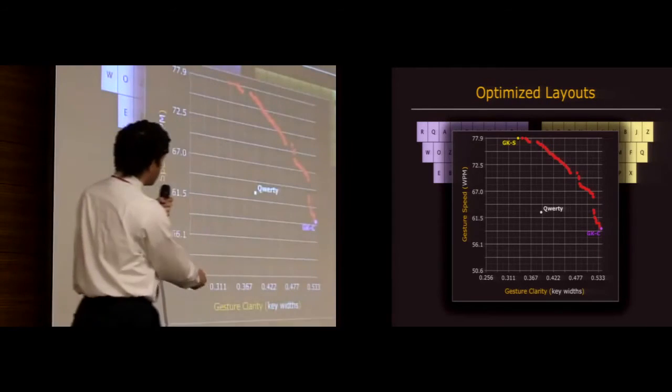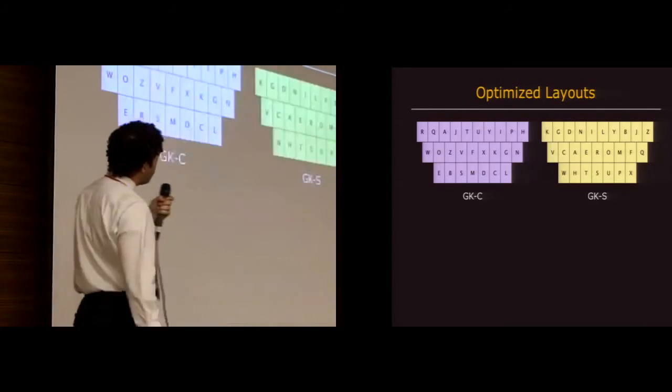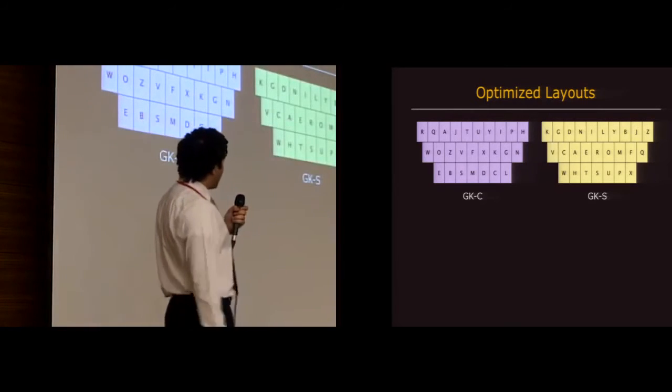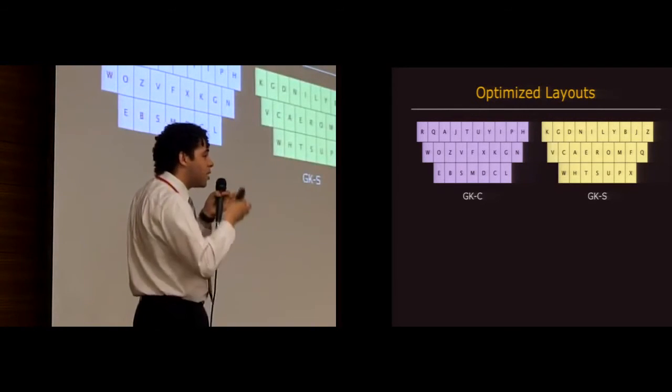Next is GKS, which was optimized for speed. So that's the one on the other end of the spectrum right here. This one I call the WHATS UP layout. And this one sort of clusters common letters towards the middle.